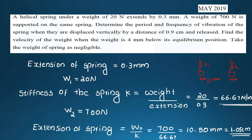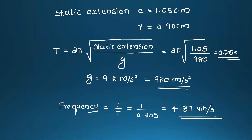Determine the period and frequency of vibration when displaced vertically by 0.9 cm and released. Using the formula, the period T equals 2π times the square root of static deflection divided by g. That gives T equal to 0.205 second, and frequency equal to 4.88 vibrations per second.